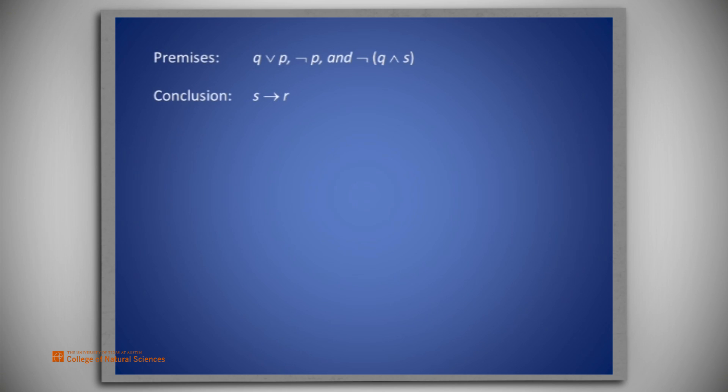The premises that we will be considering for this problem are Q or P together with not P and the negation of the conjunction of Q and S. The conclusion we seek is S implies R. How should we construct a proof of this?